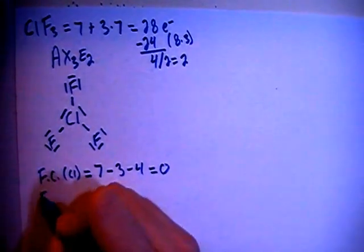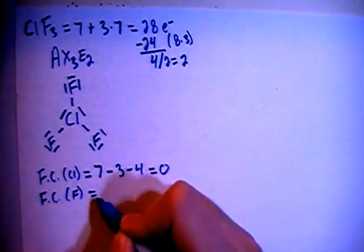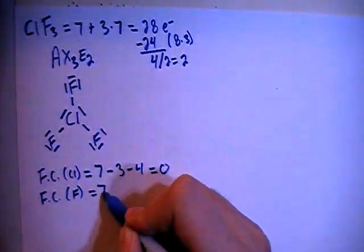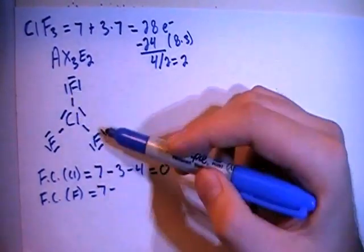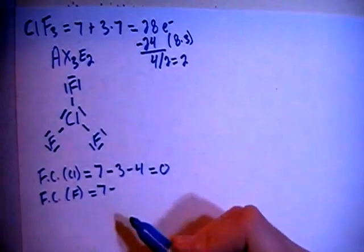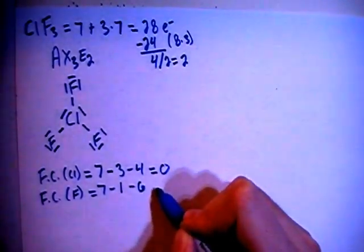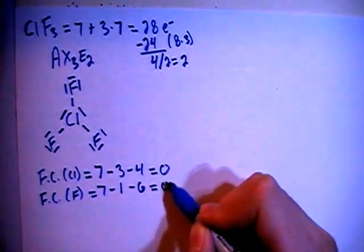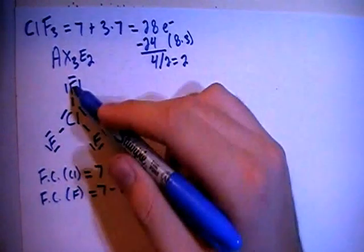And then the formal charge on each of the fluorines, which is going to be equal to the 7 valence brought in. And if you notice, they all have 1 single bond and 6 non-bonding electrons. So all their formal charges will be the same. So minus the 1 single bond minus the 6 non-bonding electrons for a formal charge of 0. And we multiply that by 3 because there are 1, 2, 3 of those.